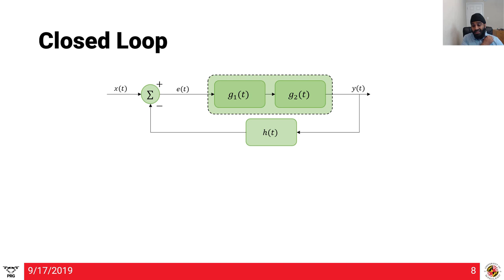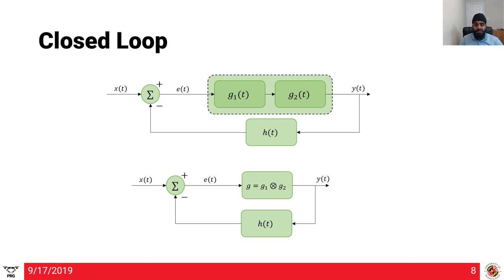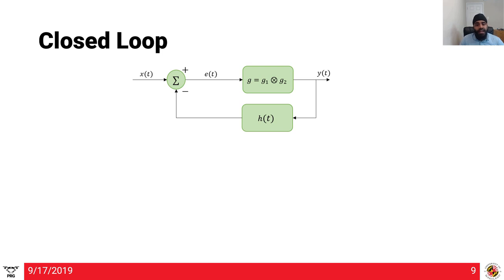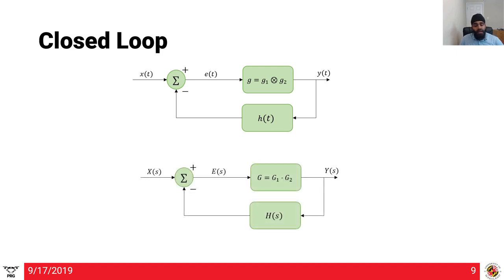We can combine G1 and G2, which is the convolution of G1 and G2, into one block. Note that all the functions here are in the time domain. Once we convert everything to Laplacian form, the block where G is G1 convolved with G2 becomes a simple multiplication in the Laplacian domain. That's an important property of the Laplace transform: convolution in the time domain is simple multiplication in the Laplacian domain.